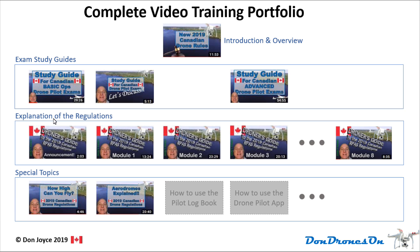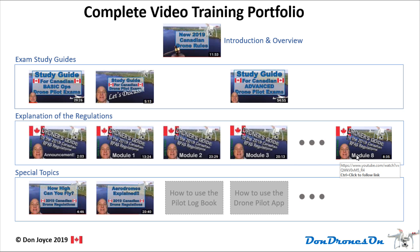The next layer of the portfolio is an in-depth explanation of each and every one of the regulations — I call this the Droner's Guide to the 2019 Canadian RPAS regulations. It starts with an introduction and then eight linked modules that talk about specific sets of rules, translating them from Transport Canada's complex language into plain everyday English. I'll talk about the content of these in a few moments.